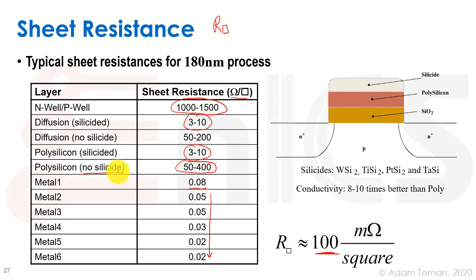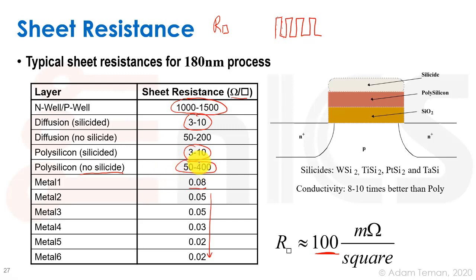Nice resistors are usually used in analog circuits, not digital. To get high resistance, we snake a poly layer around, and counting the number of squares gives a large total. Matching layout techniques are used to get good matching for a voltage divider rather than targeting an exact resistance value. A silicide block prevents the growth of the top silicide layer, which would otherwise reduce resistance.